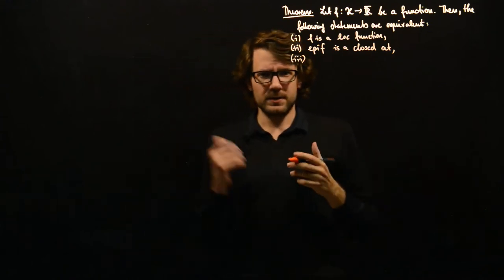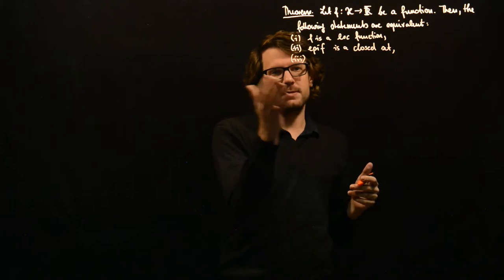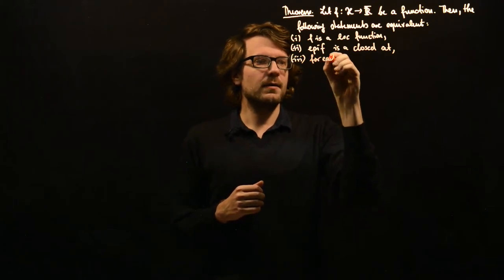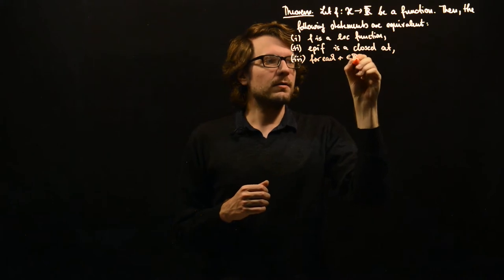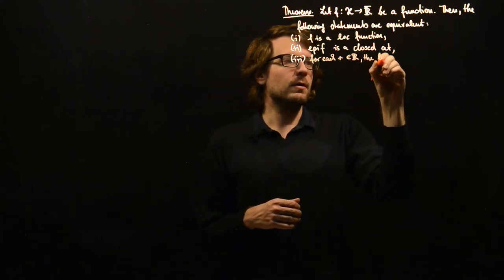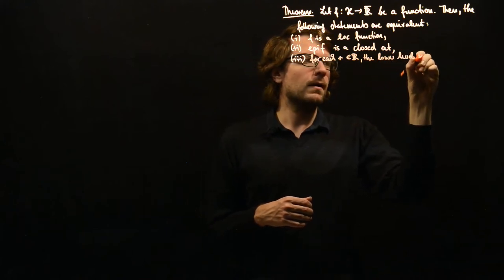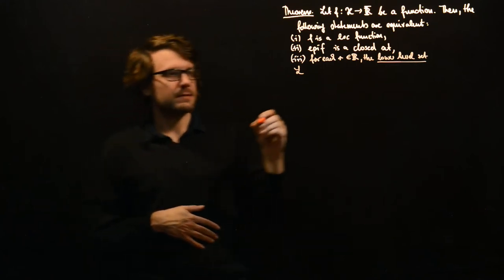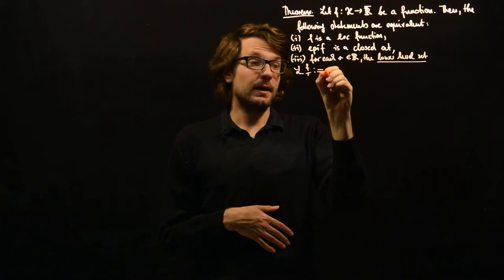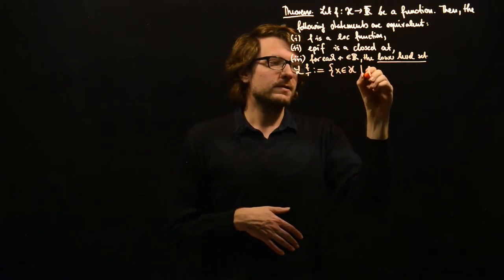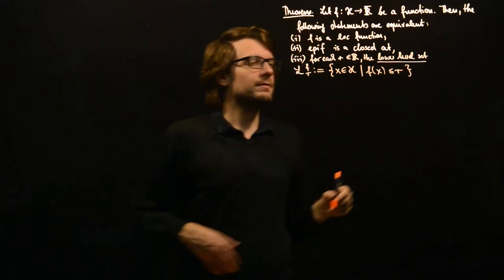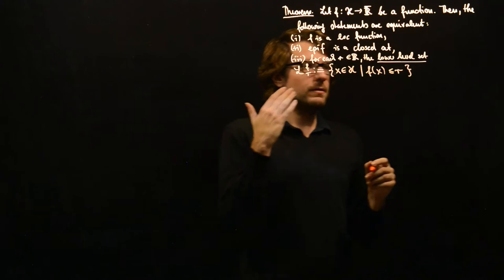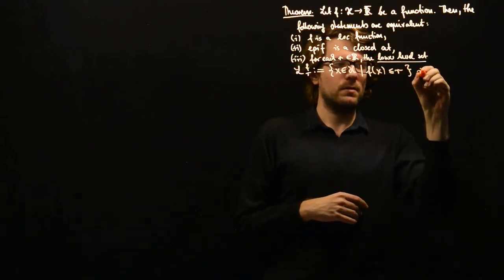The third statement is a bit different from what we have seen in convexity, because here we can't use the strict epigraph. Instead we have another characterization: for each r in R, the so-called lower level set. The notation is L(f,r), defined as the set of all x such that f(x) ≤ r. So it's kind of slices in the epigraph. All these lower level sets are closed.